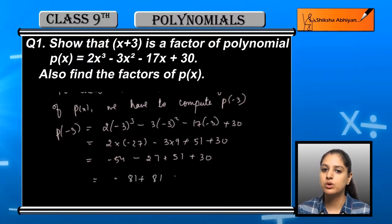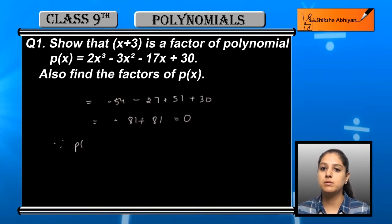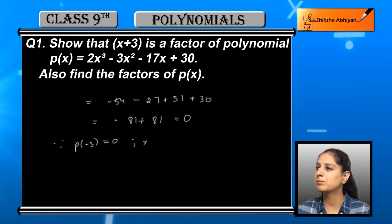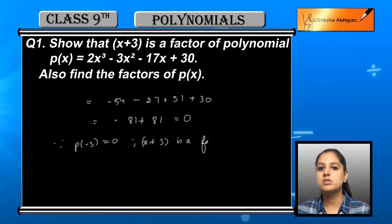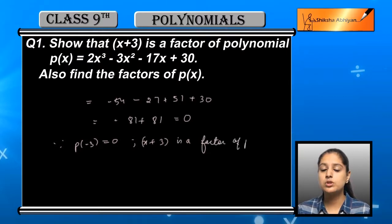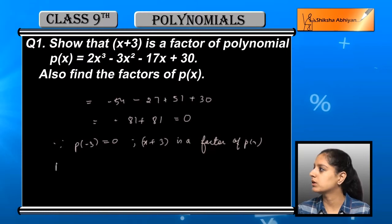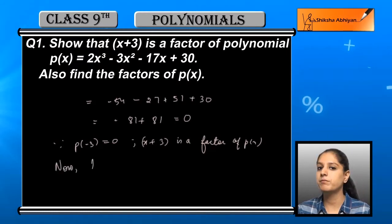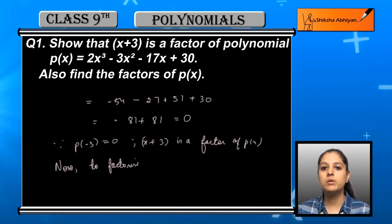We get minus 81 plus 81, which gives us 0. So p(minus 3) = 0. x की जगह minus 3 put करने पर हमारे पास complete value 0 आई है। आपको पता है कि अगर ऐसा हो — value 0 आ जाए — so that linear polynomial becomes a factor of that polynomial. So x plus 3 is a factor of p(x).